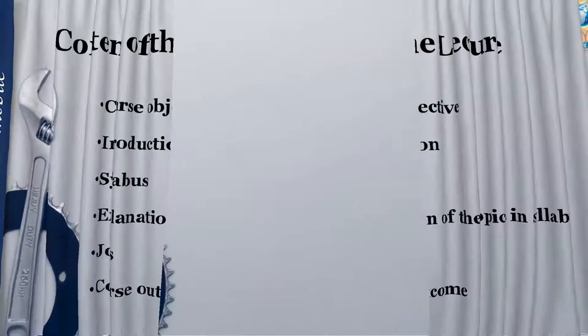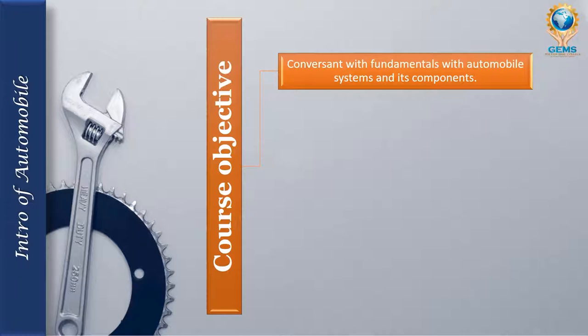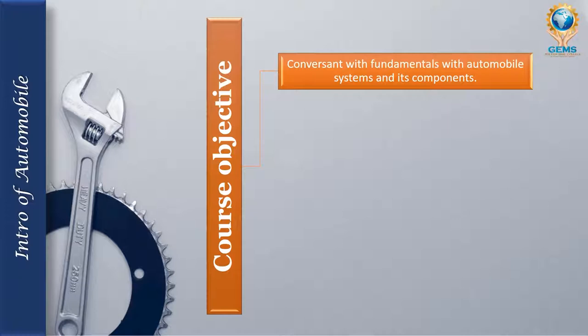What are the course objectives of this automobile engineering subject? The first objective is to become conversant with fundamentals of automobile systems and their components. Automobile engineering means you have to know A to Z of automobile components. For example, if you choose only the engine, you have to know from top to bottom — what rings are inside, what walls, what bushes, what screws are inside.